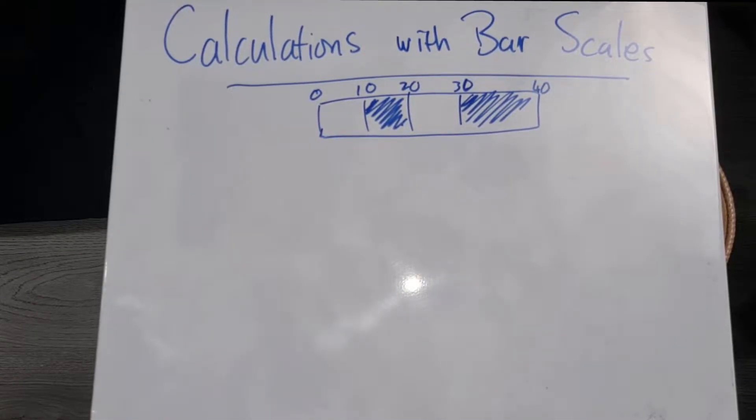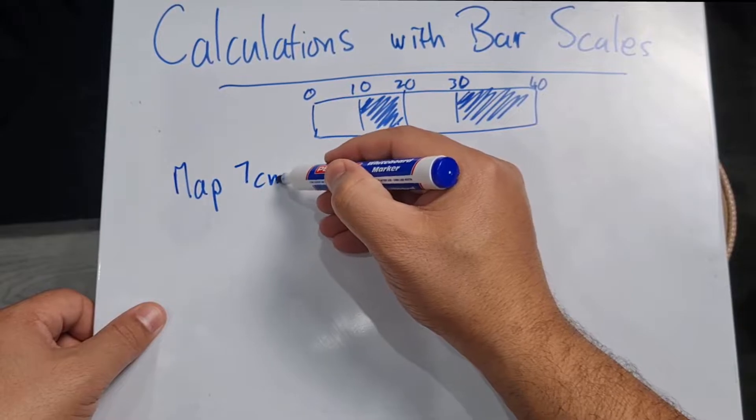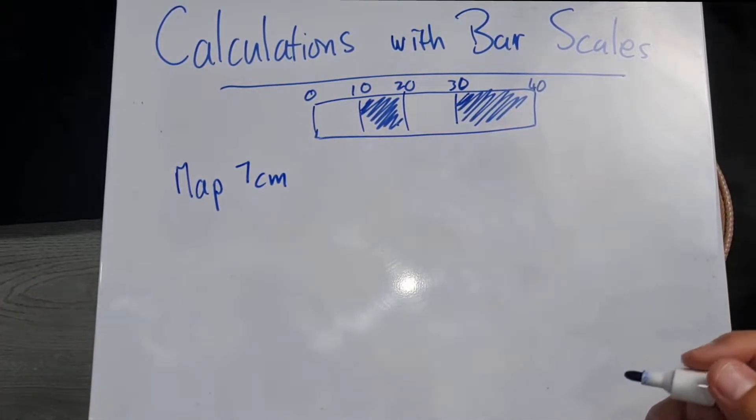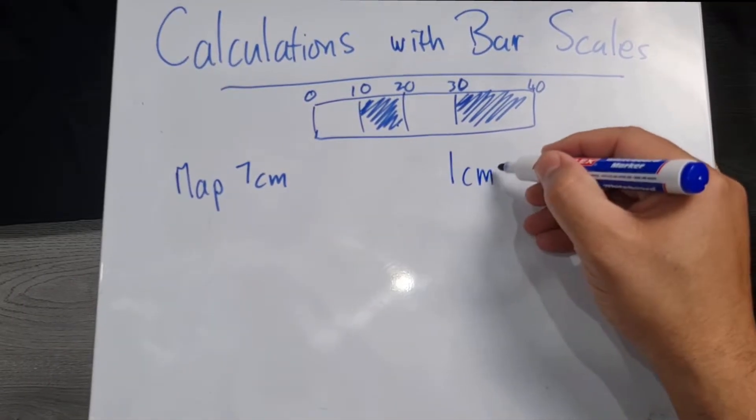Okay, so let's use an example. They mention to us that our distance on the map is seven centimeters and we need to work out what the actual distance is going to be. They also make mention of the fact that in this case, one centimeter is equal to 10 kilometers.